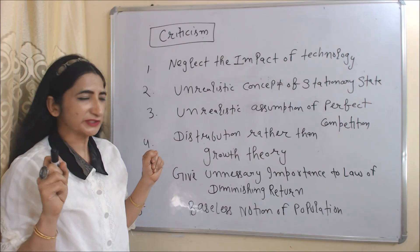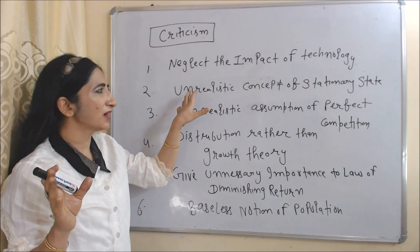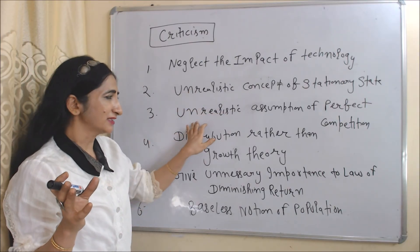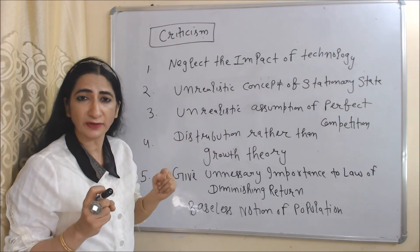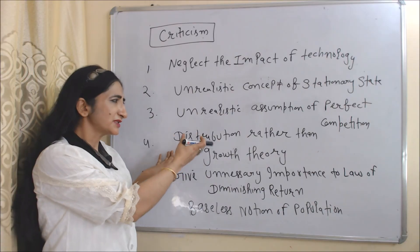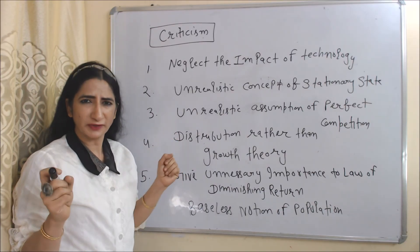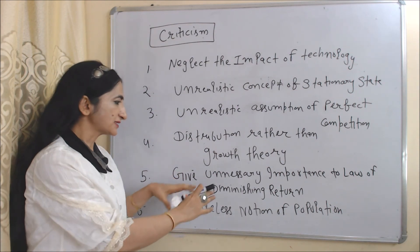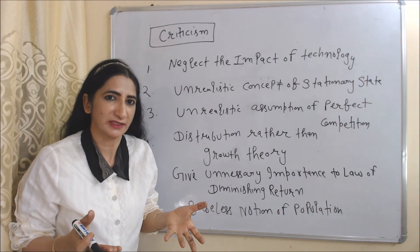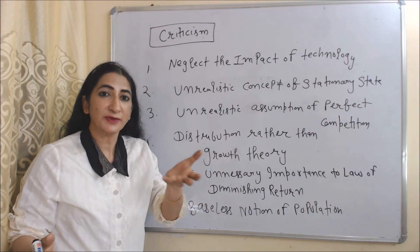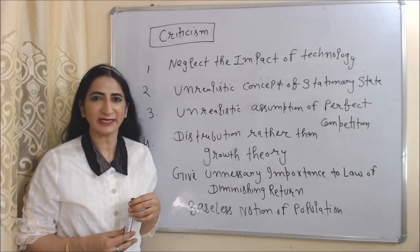Now we will see the criticisms of this theory. First, this theory ignores the impact of technology. Second, it assumes an unrealistic concept of a stationary state. Third, it assumes unrealistic perfect competition — in reality, there is imperfect competition also. Fourth, this theory seems more like a distribution theory rather than a growth theory, and gives unnecessary importance to the law of diminishing returns. Fifth, it has a baseless notion of population — according to this theory, as wages increase, population also increases, but in many Western countries, as wages increase, population actually falls.